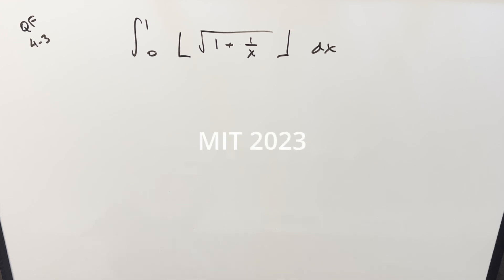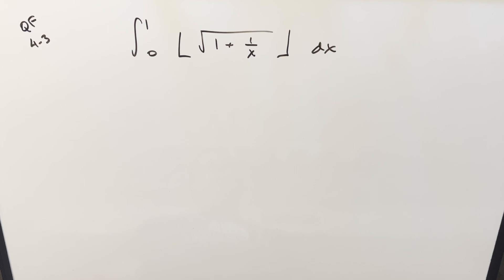We have today an integral with the floor function in it. This one's from MIT Integration Bee 2023 quarterfinals round 4 problem 3. We have the integral from 0 to 1 of the floor of the square root of 1 plus 1 over x, dx.